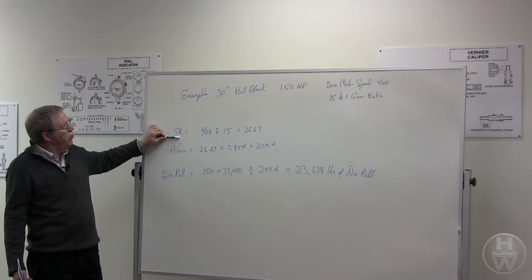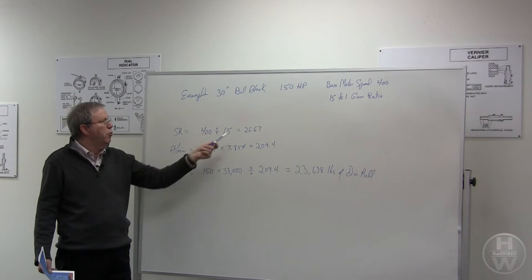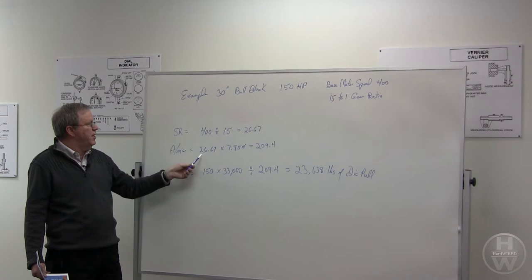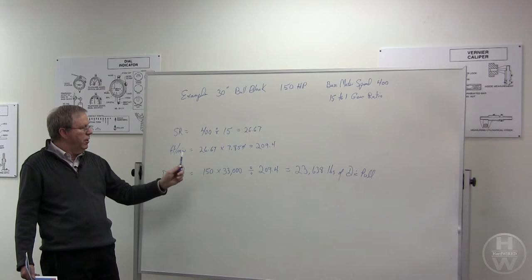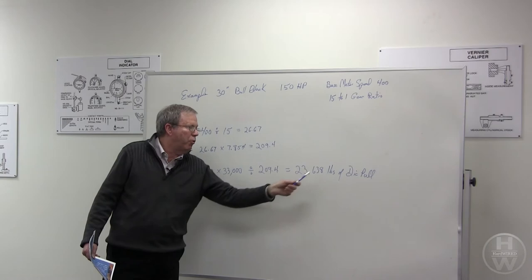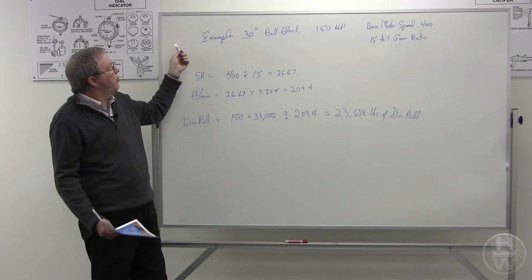Again, feet per minute would be shaft rotation, which is base speed, the 400 divided by 15, equaling 26.67. To figure out feet per minute, we take the 26.67 times block circumference in feet, which is 209. So we now have the 150 horsepower times 33,000 divided by the 209, giving us a die pull of 23,638 pounds for this specific bull block example.